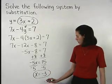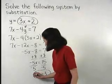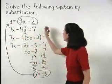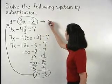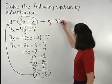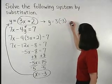To solve for y, we plug negative 3 back in for the x in our first equation. We have y equals 3 times negative 3 plus 2.